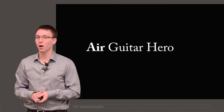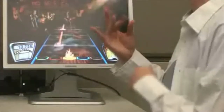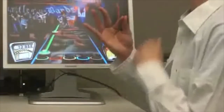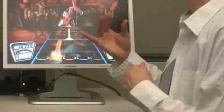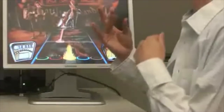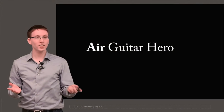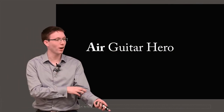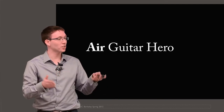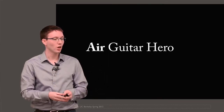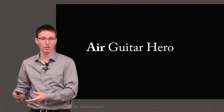Here's another example from another colleague of mine, Scott Saponas, at Microsoft Research — playing Guitar Hero with an Air Guitar. He has a number of electrodes glued to his forearm that can sense muscle contractions. He then uses signal processing algorithms to figure out what the configuration of his hand was given a set of sensor signals.